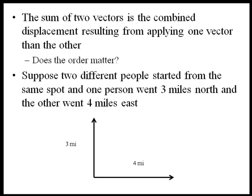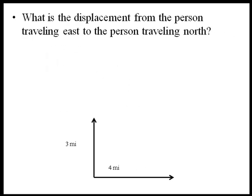Now we have two possible displacements. Let's say we look at the displacement from the person going east to the person going north. Clearly that's not the same vector that we had before. Notice it is the same magnitude, so the distance between the two endpoints is the same, but because the angle is different or the direction is different, they are not the same vector.